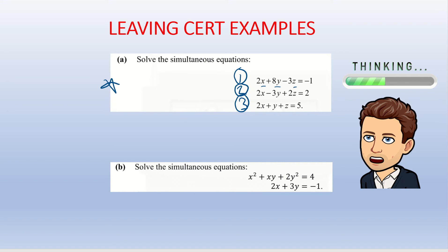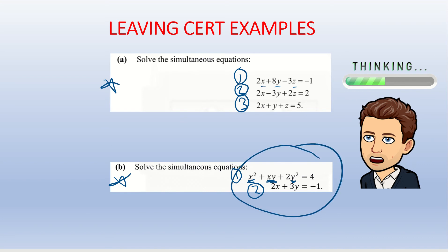For the second type, you're back to two equations and two unknowns, but the first equation contains x squared, y squared, and xy, which makes things much more difficult. You can't use the Junior Cert elimination method because x squared is not the same as x, and y squared is not the same as y.